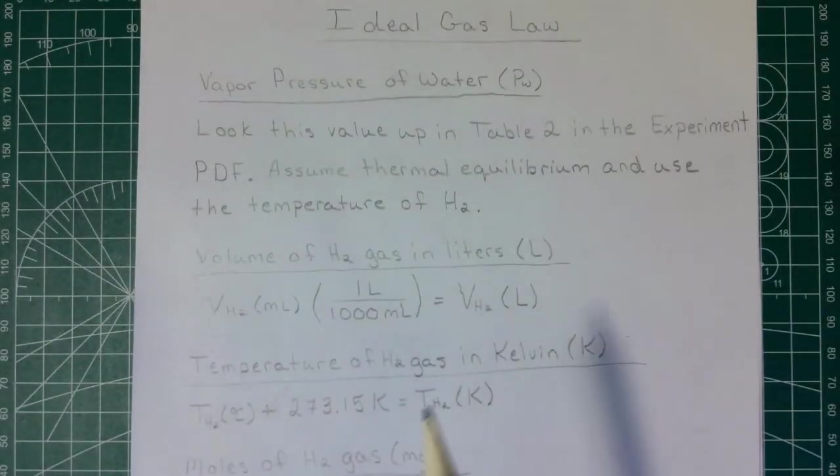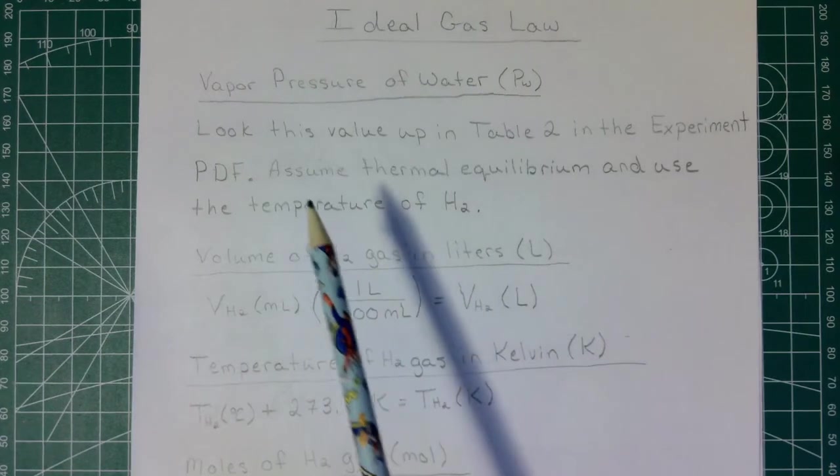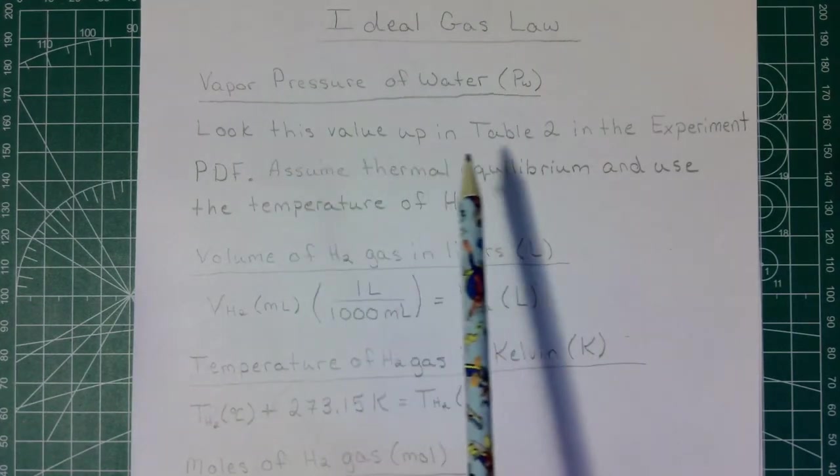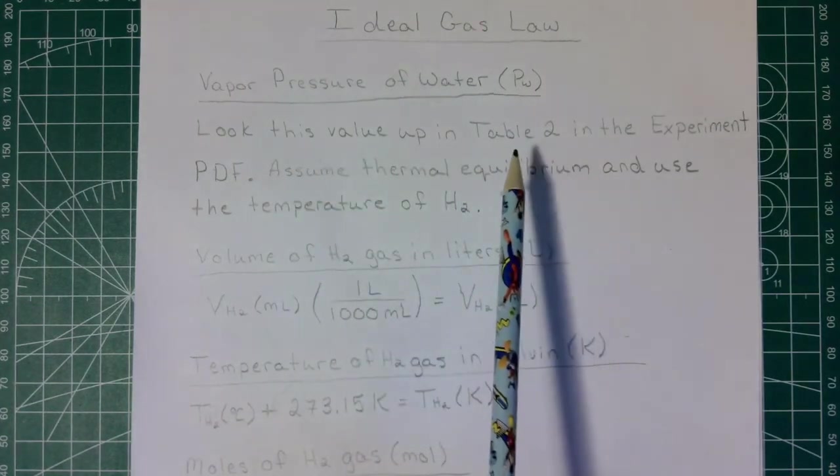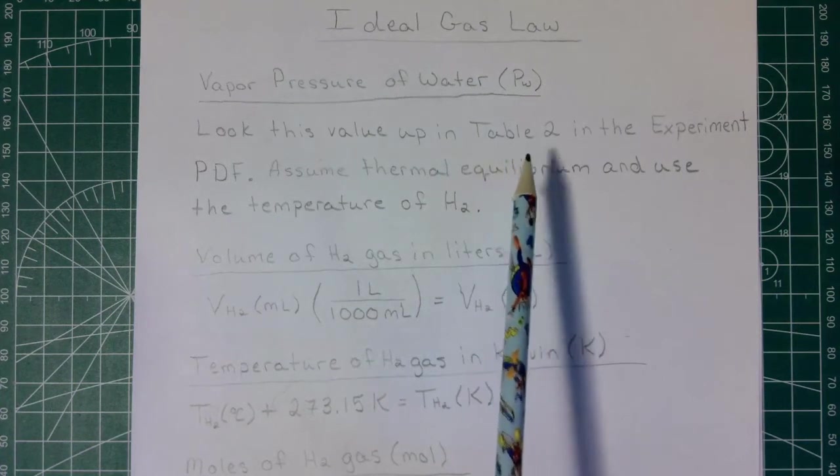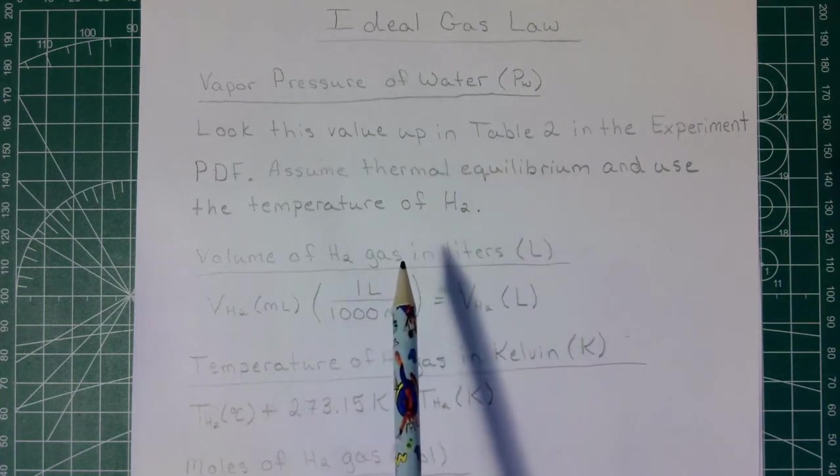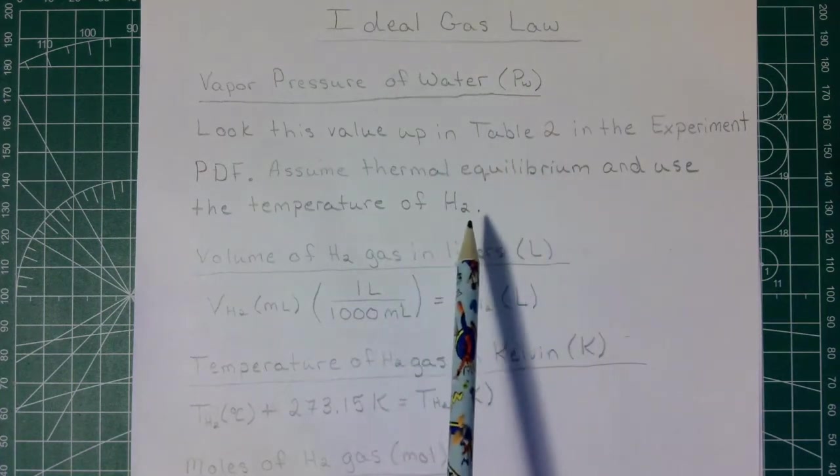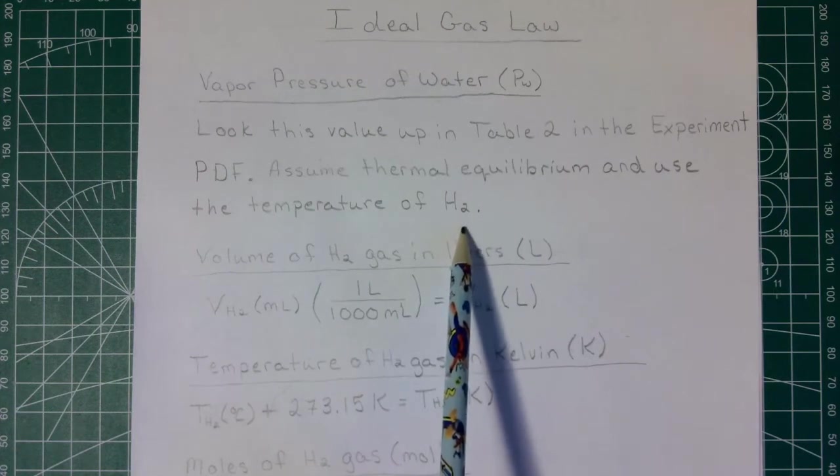So the first thing we need to know is going to be the vapor pressure of the water, and this is something that we're going to look up in the experimental PDF in table 2, and you're going to use the temperature of the H2 that you were given in your provisional data.